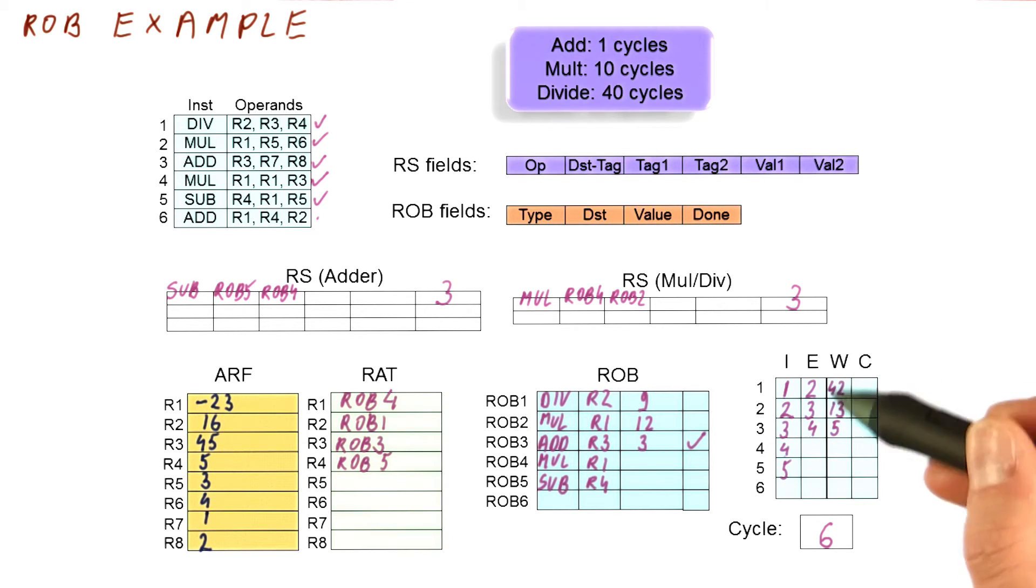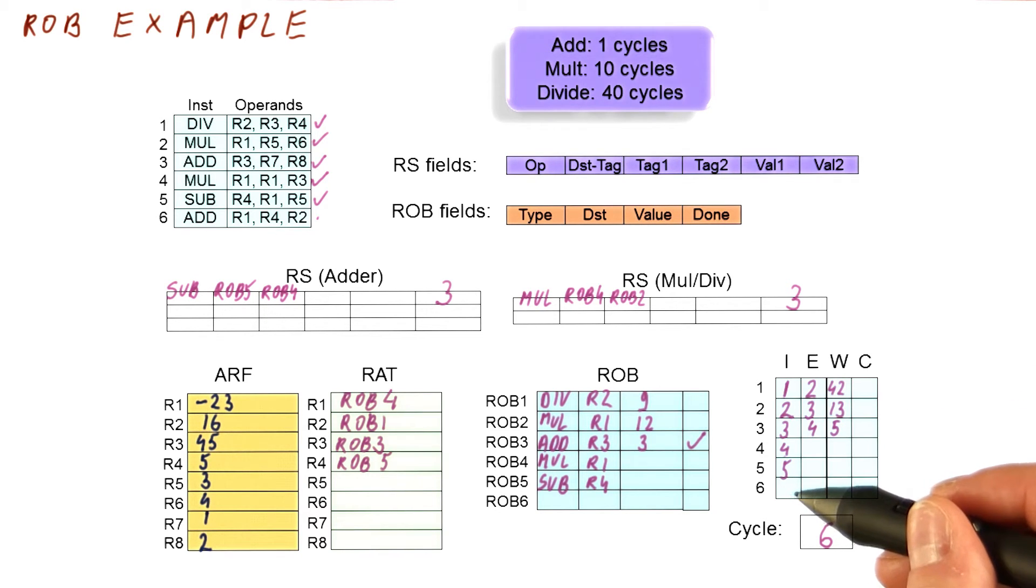These two still have a while to go before they're going to write the results. Because we're in cycle six, the next thing here is going to happen in cycle 13. So in cycle six, pretty much the only thing that happens is these two instructions continue to execute and we try to issue an instruction.